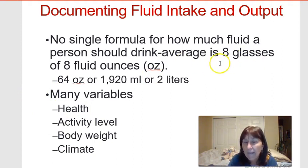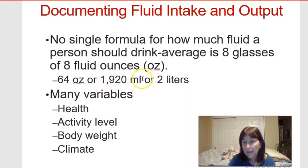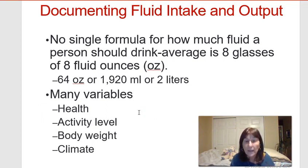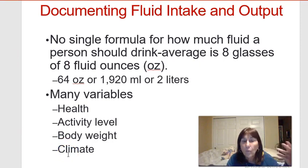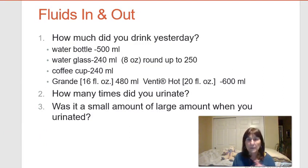Generally, about eight glasses of eight fluid ounces is normal for most people — about 64 ounces. Converting that: one ounce equals 30 cc's, so that's about 1,920 milliliters, or roughly two liters. However, it depends on your health, body size, how much you're sweating, and even fluid from foods like watermelon, cucumbers, strawberries, and cherries.